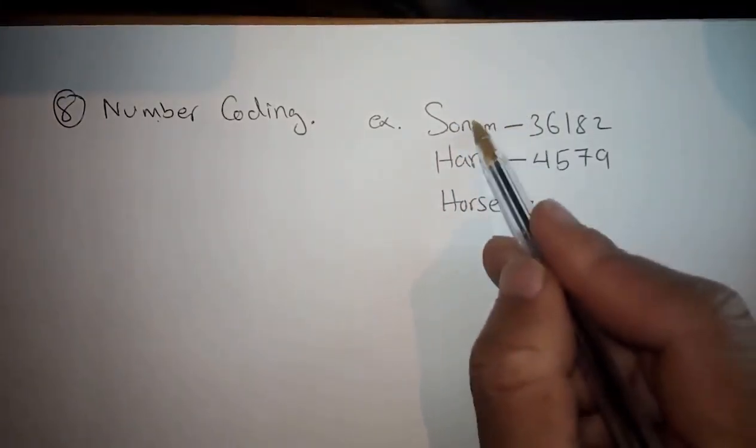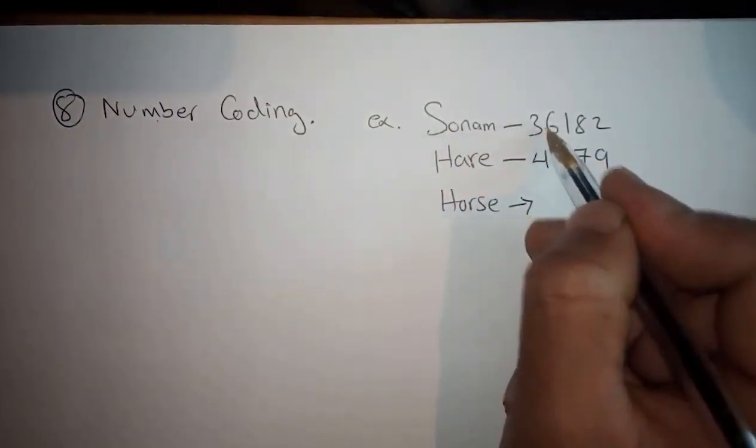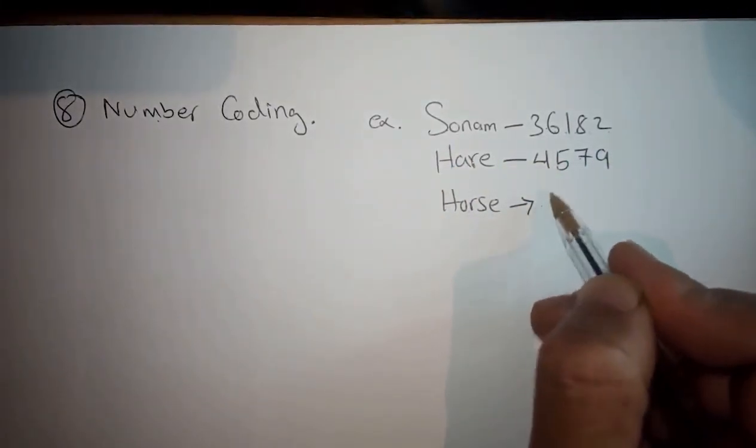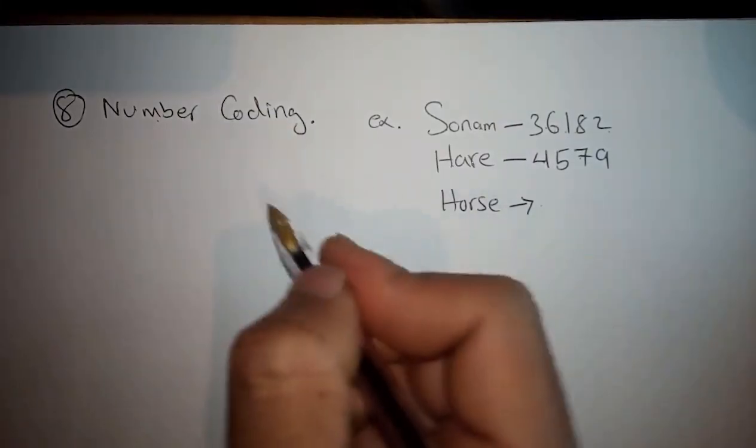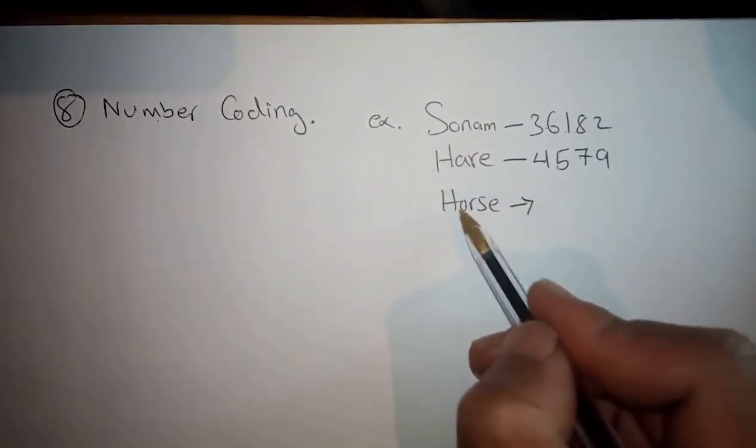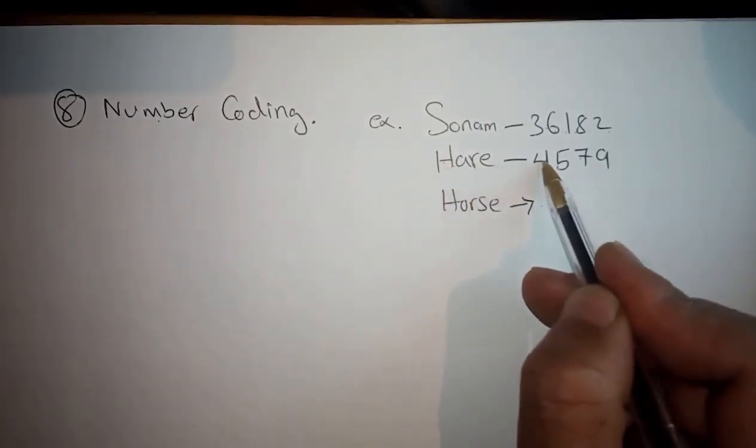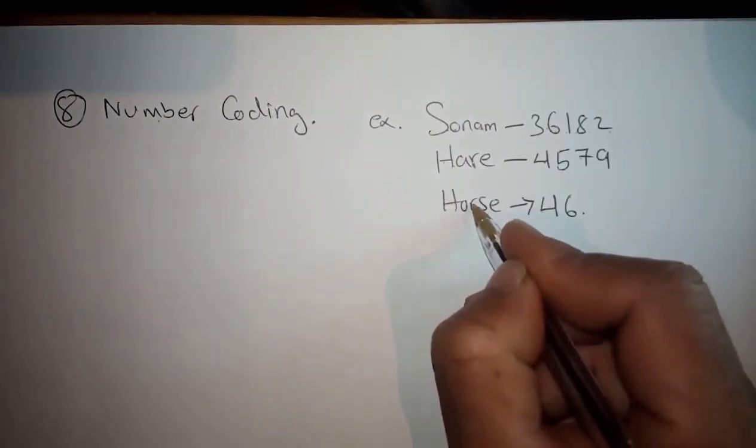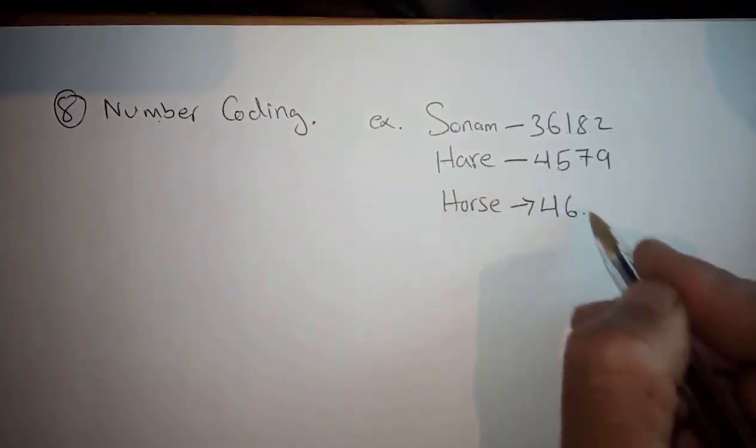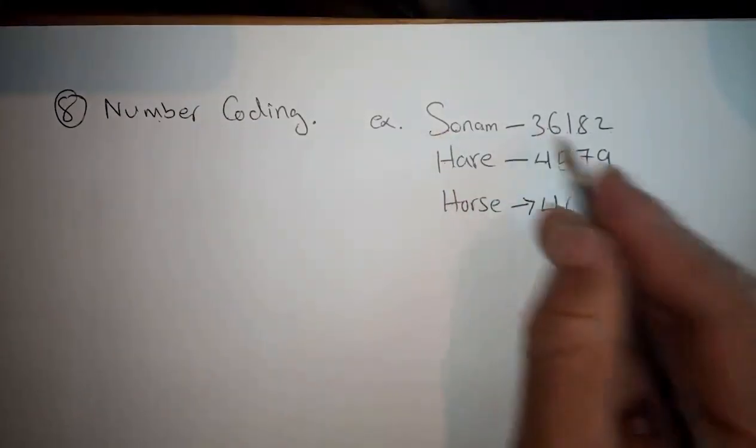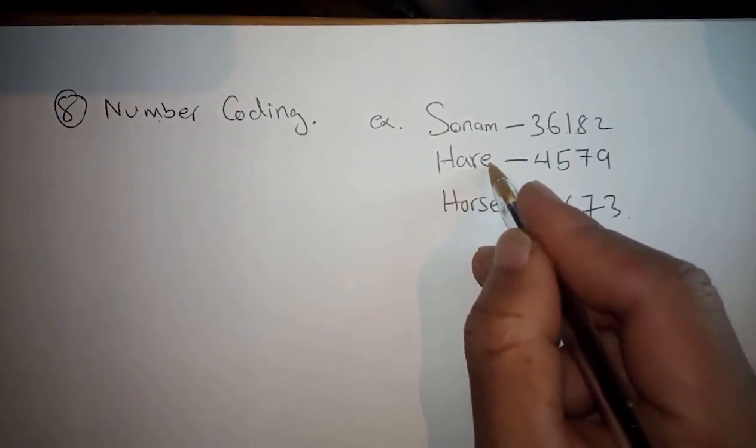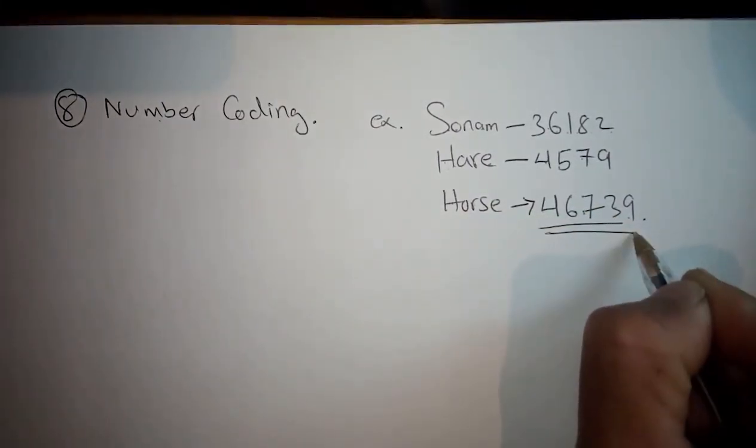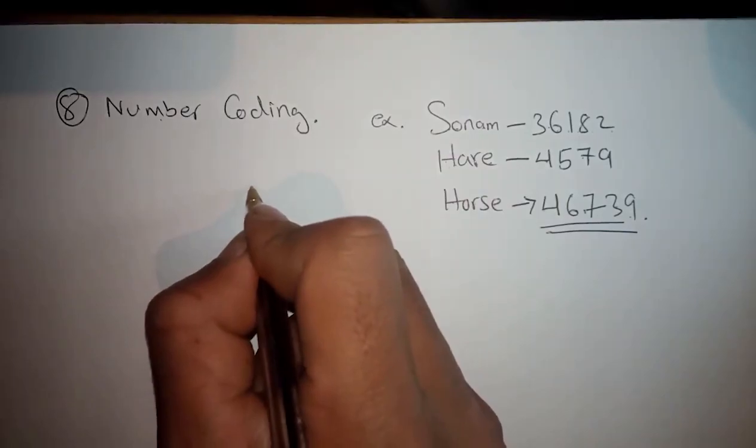To simplify: H's corresponding number is four, O's corresponding number is six, R's corresponding number is seven, S's corresponding number is three, E's corresponding number is nine. So four, six, seven, three, nine. Horse will be coded like this.